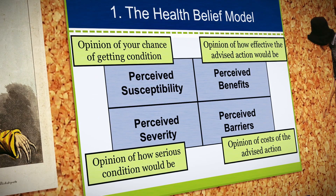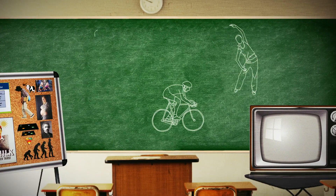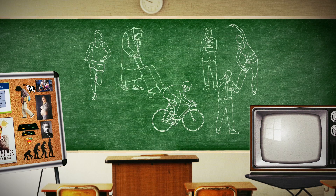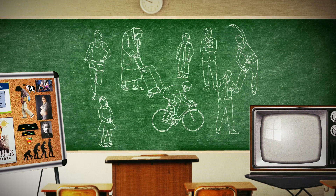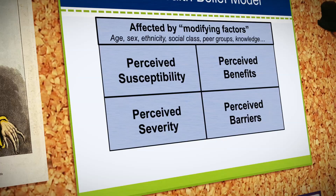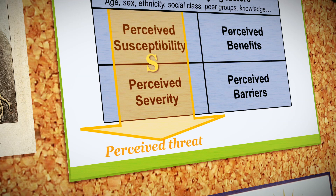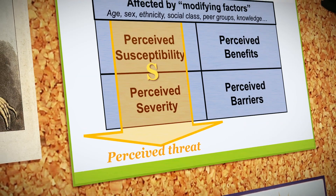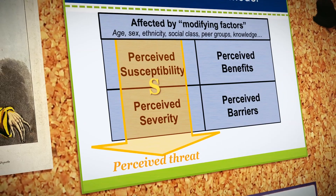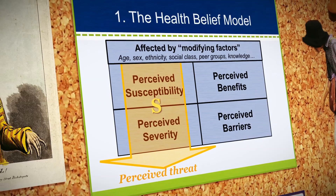The health belief model notes that all these perceptions are affected by modifying factors — things such as age, ethnicity, socioeconomic status, peer groups, knowledge, and so on. Our evaluations of perceived susceptibility and perceived severity combine to create the perception of threat. If perceived threat is high, the likelihood of engaging in health-protective behavior is higher than if the perception of threat was low, which might result in little motivation to change behavior.